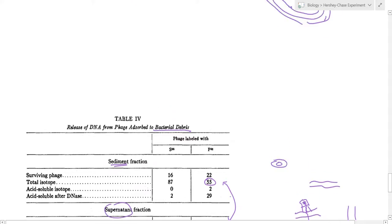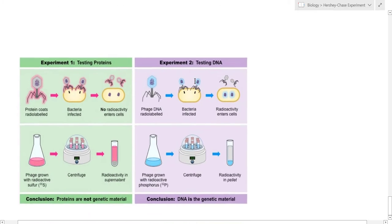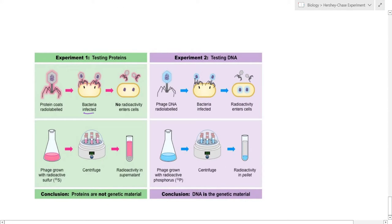But the main experiment that they did and that you probably need to know is this one over here. So to summarize it, when they infected bacteria with the protein coats being radiolabeled using sulfur then the radioactivity was found in the supernatant, the fluid on top, indicating that the protein coats were the ones containing sulfur and were being detached from the cells.